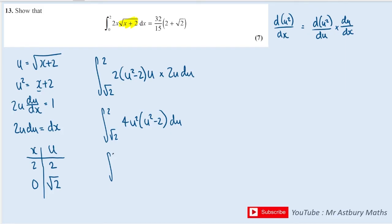We can simplify that further to get 4u to the 4 minus 8u squared.